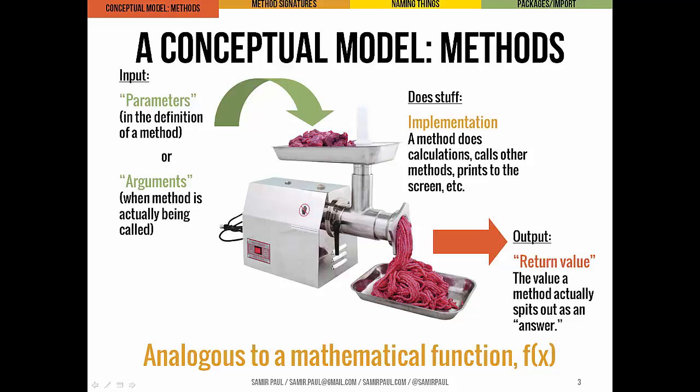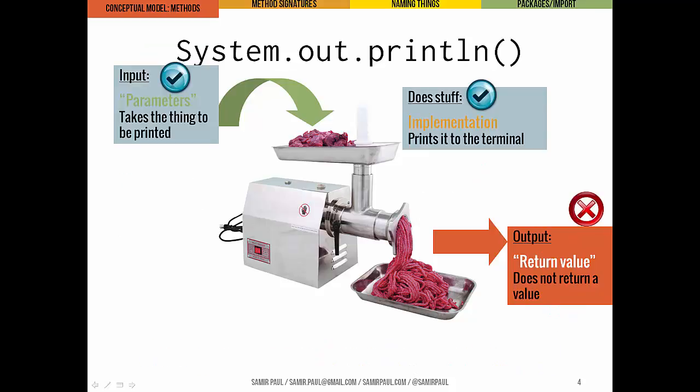We call the inputs parameters — that's what we call them in the actual definition of the method. When we're calling a method, we call them arguments. Those are the things that go into the meat grinder. Then the meat grinder does stuff — that's the implementation: what calculations it performs, what other methods it calls, maybe it prints to the screen. And last, methods can return a single value or no values at all — that's the answer that gets spit out.